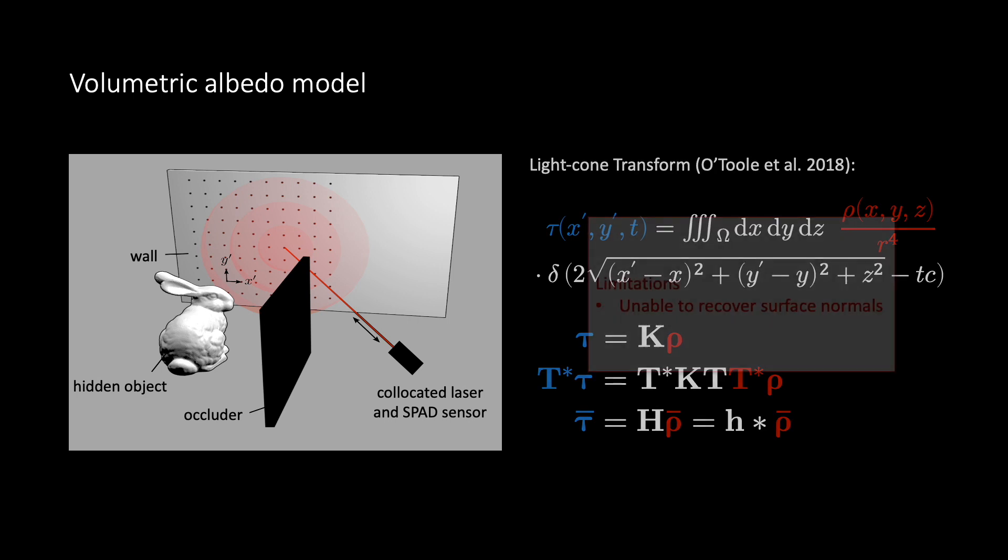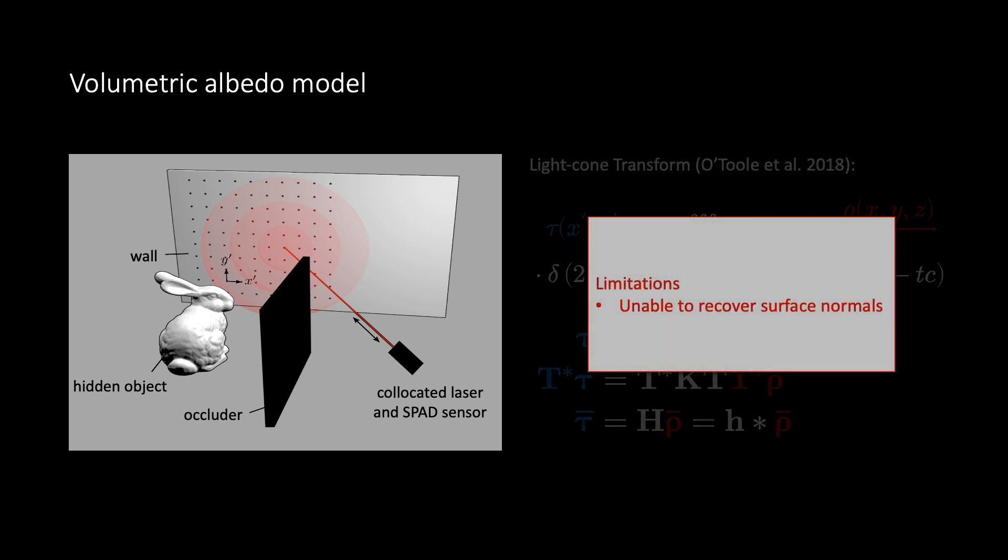Unfortunately, the volumetric albedo model is agnostic to the surface normals of the hidden scene and does not facilitate recovery thereof, which we require for surface reconstruction.